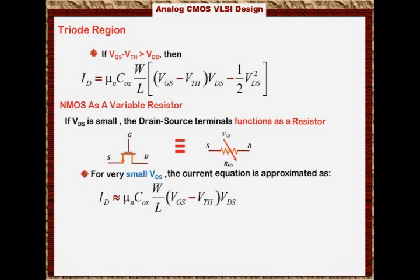And you should not memorize this equation. Here you should memorize the main equation. And you should know that for small VDS, you omit the square term. That's something you should know. It should make sense to you. Because VDS is small, the square term is omitted.